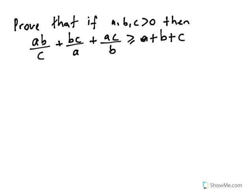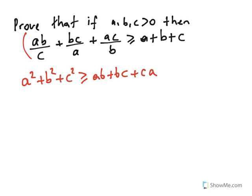Here is another exercise: prove that if A, B, C are positive reals, then AB/C + BC/A + AC/B ≥ A+B+C. We apply pairwise AM-GM: AB/C + BC/A ≥ 2√(AB/C · BC/A).